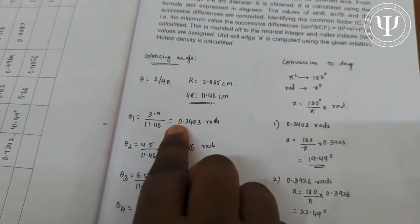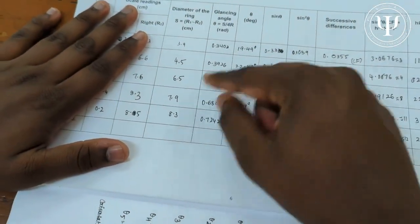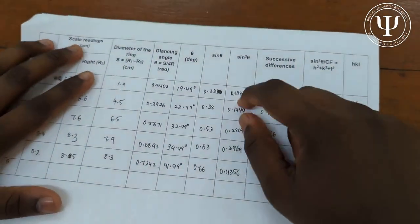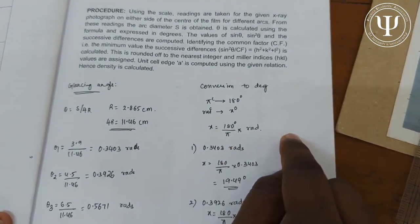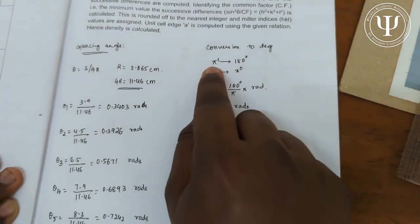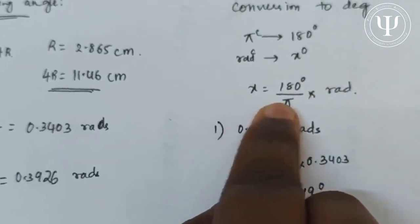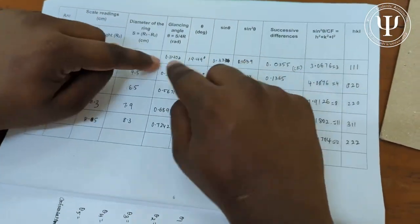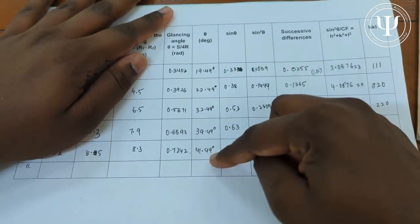For the first arc, θ₁ = 3.9 / 11.46 = 0.3403 radians. The 4r value remains constant, so repeat this for all five s values to get five θ readings. To convert θ to degrees, use the formula: degrees = (180 / π) × radians. Applying this, 0.3403 radians gives 19.49 degrees.